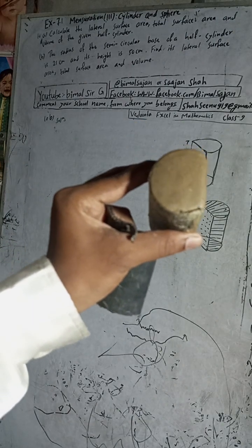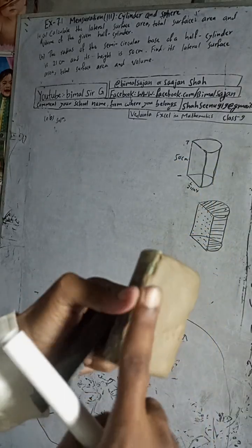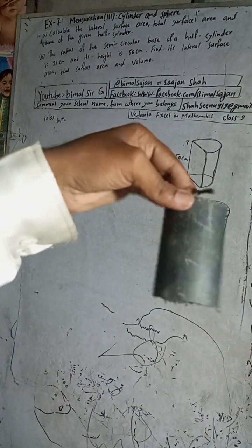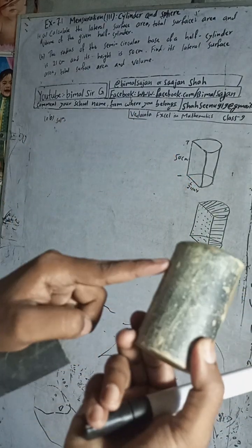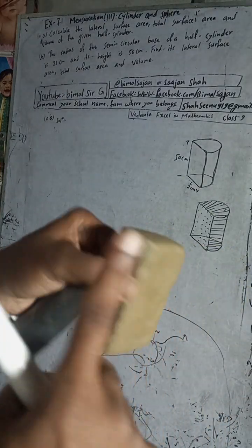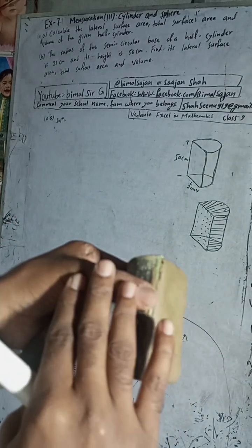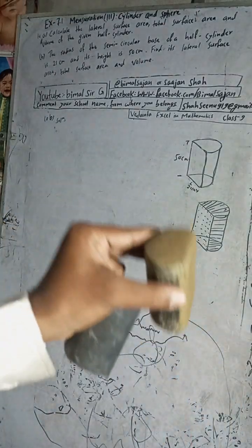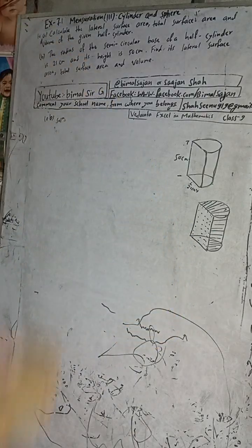Now we have to find the lateral surface area. The curved part you see is called the curved surface area. The flat rectangular surface plus this curved surface area is called the lateral surface area. And when we add the two semicircles, we get the total surface area.